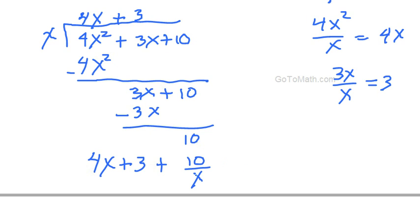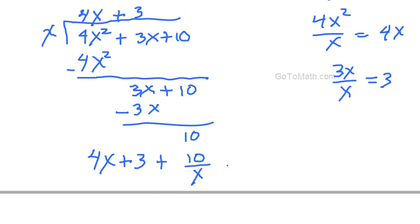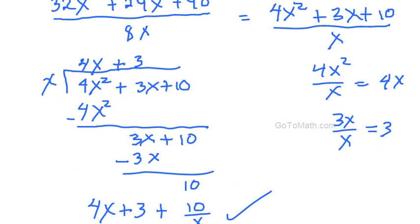10 over x. Now to check that if this is actually equal to our original, what you could do is get a common denominator all the way across. That means you multiply that by x, then that by x, then just be everything over x. So you'd end up with 4x squared plus 3x, and then plus 10. So that's the form that we are looking for.